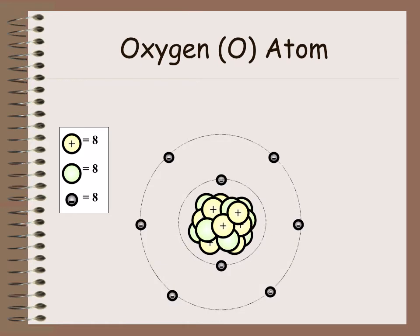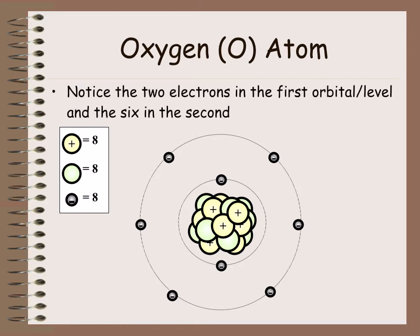Oxygen is number eight on the periodic table. So it has eight protons, which also means it has eight electrons. Now if you also look on the periodic table, the mass number for oxygen is 16. And 16 minus the number of protons is also eight, which means it has eight neutrons. So there are two electrons in the first level here and six in the second. It could hold two more in the second before it got full.